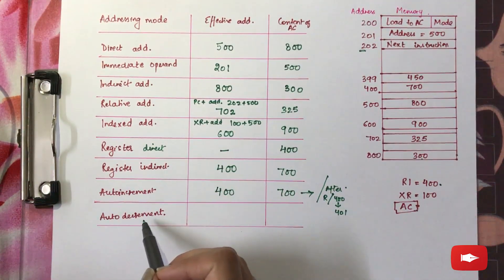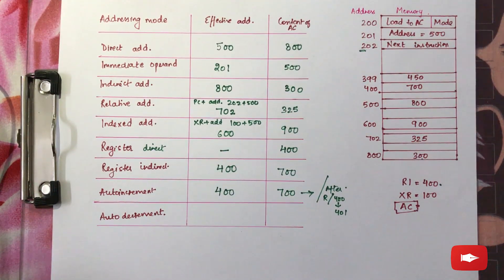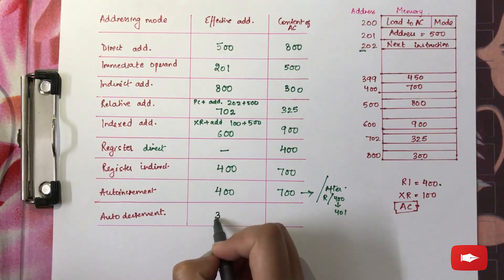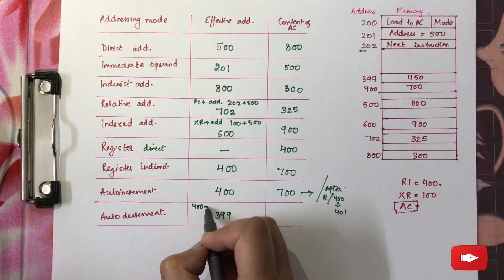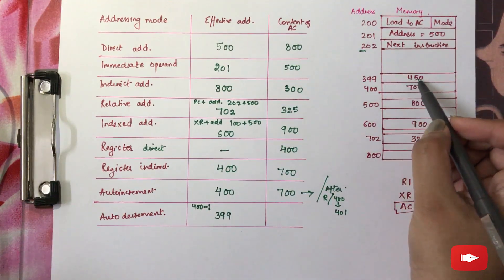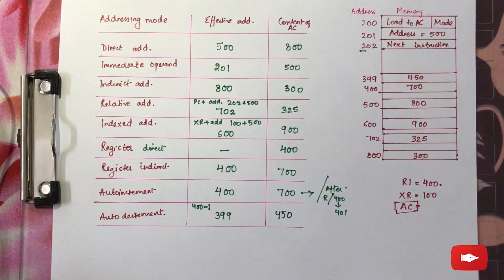Auto decrement mode states that the value of the register is decremented by 1 prior to the execution of the instruction. Therefore, the effective address will not be 400 but 399 — that is the register value decremented by 1. And the value at 399 is 450, which is the value of your output. I hope this video was useful to you. If you have any doubts, you can ask in the comments below. Thank you.